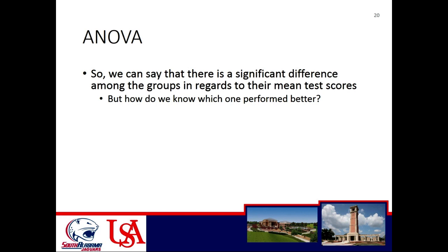Can we say there's a significant difference among the groups in regards to their mean test scores? Yes. We saw a significant overall difference — our ANOVA was statistically significant — so we know there's some type of difference in our groups. However, one thing ANOVA doesn't directly tell us is which group performed better.